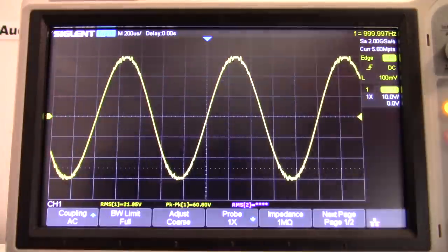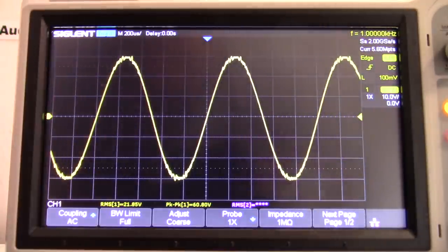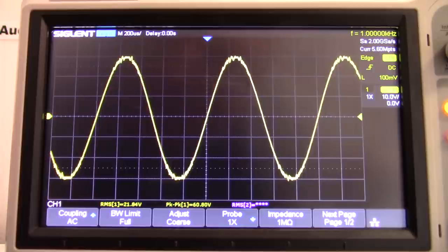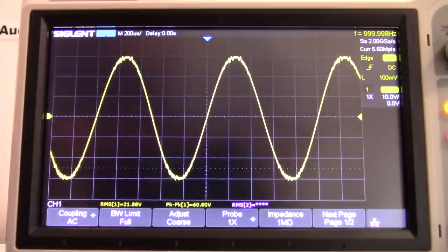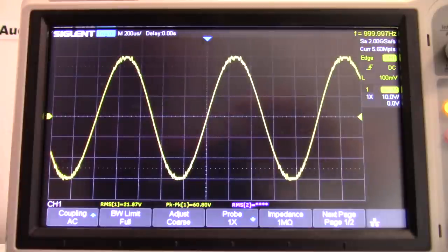I can smell the heat coming off of the resistor bank. We'll say 21.85. So at 32 volts supply, we're hitting 59.67 watts into an 8-ohm load.